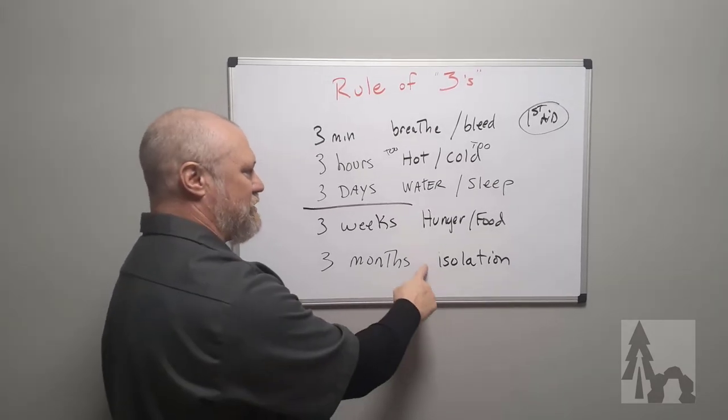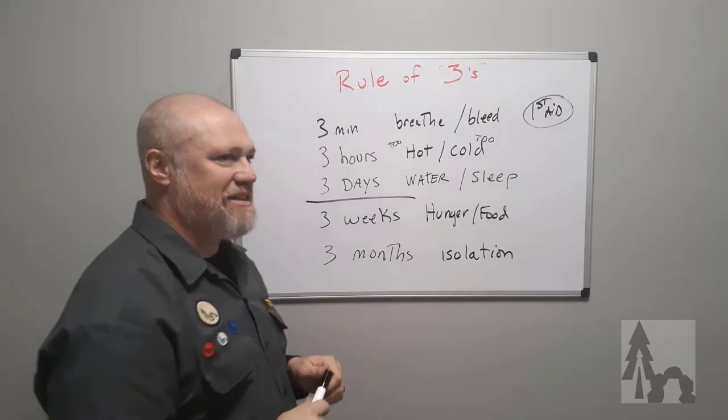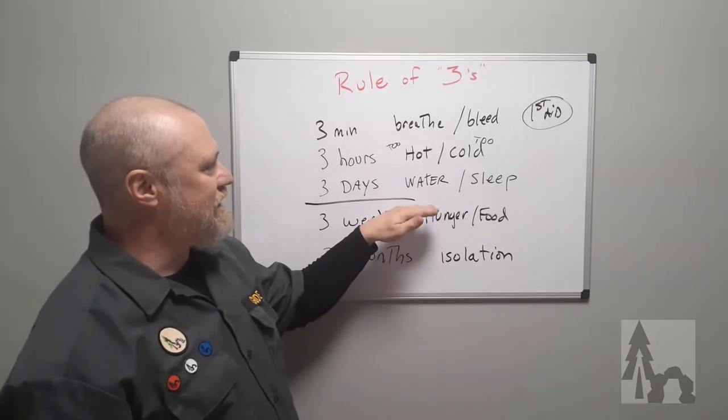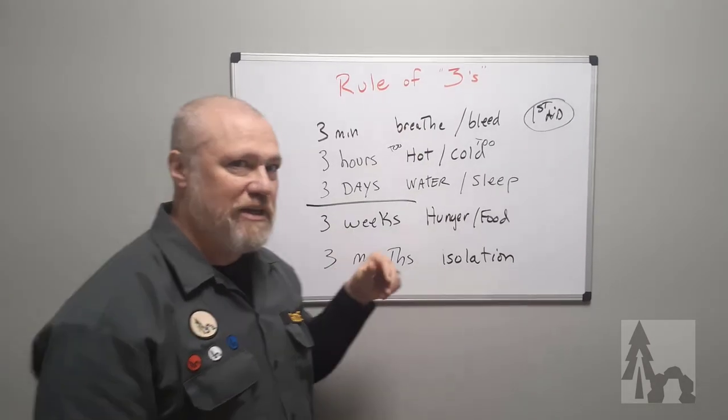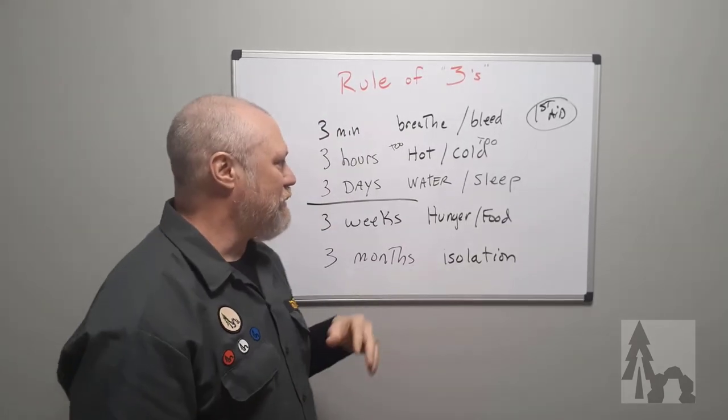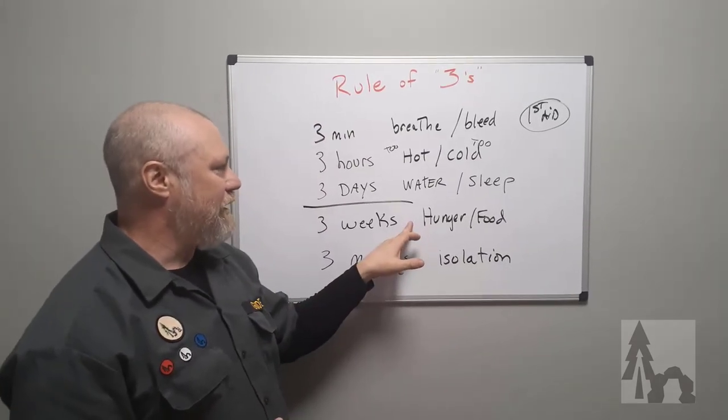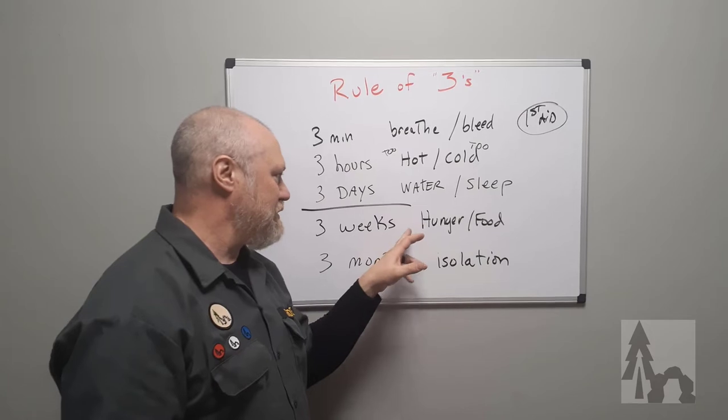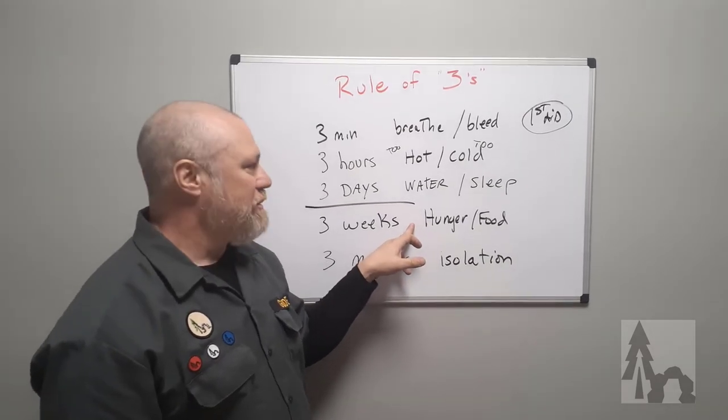Those can take months or weeks to set in. So as long as you stay calm and attend to the immediate concerns by following the Rule of Threes or keeping that in mind, then you can mostly work out the rest. You might be unpleasant for the first week with no food, but you can always eat things you wouldn't normally think of as food: earthworms, grubs, small fish, lots of things.